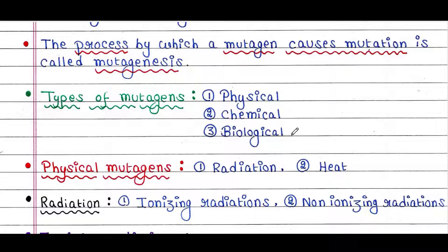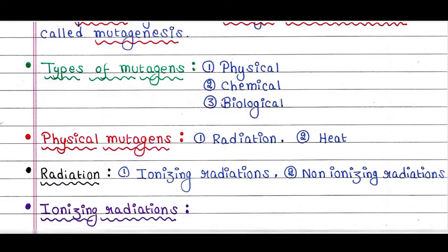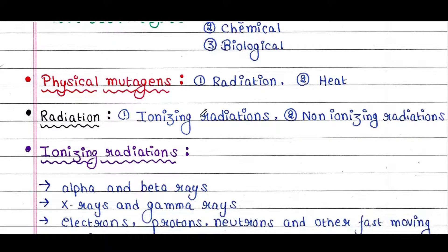First we will talk about physical mutagens. Physical mutagens include radiation and heat. Radiation mutagens are of different types: ionizing radiations and non-ionizing radiations.